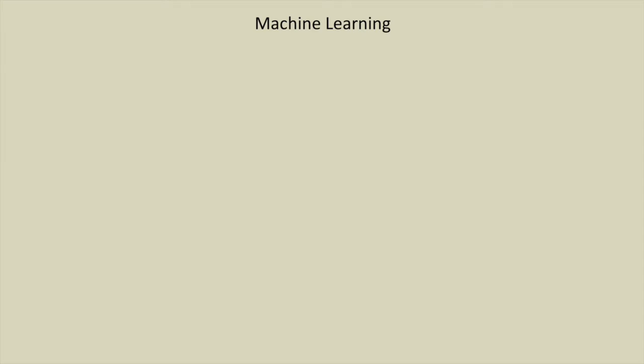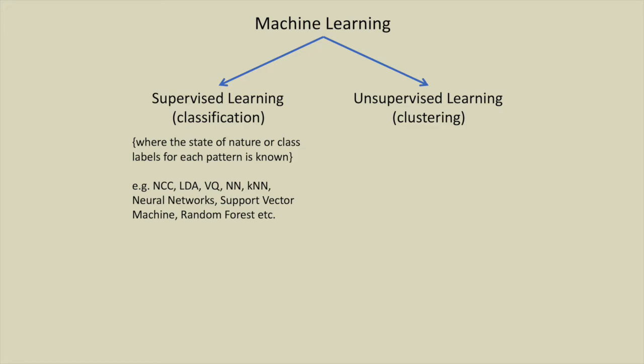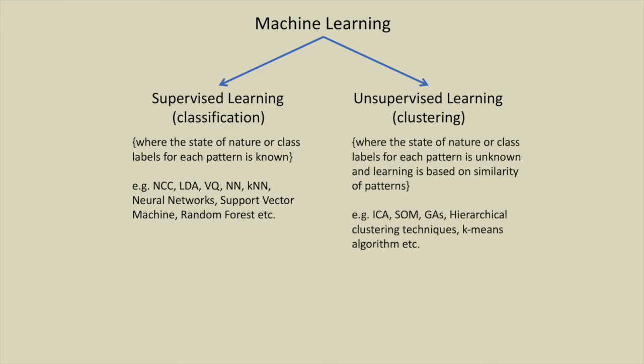Now let us see a quick overview of machine learning. It can be subdivided into two main categories: supervised learning and unsupervised learning. Classification falls under supervised learning whereas clustering comes under unsupervised learning. For supervised learning the state of nature or class labels for each pattern or object is known whereas for unsupervised learning it is unknown.